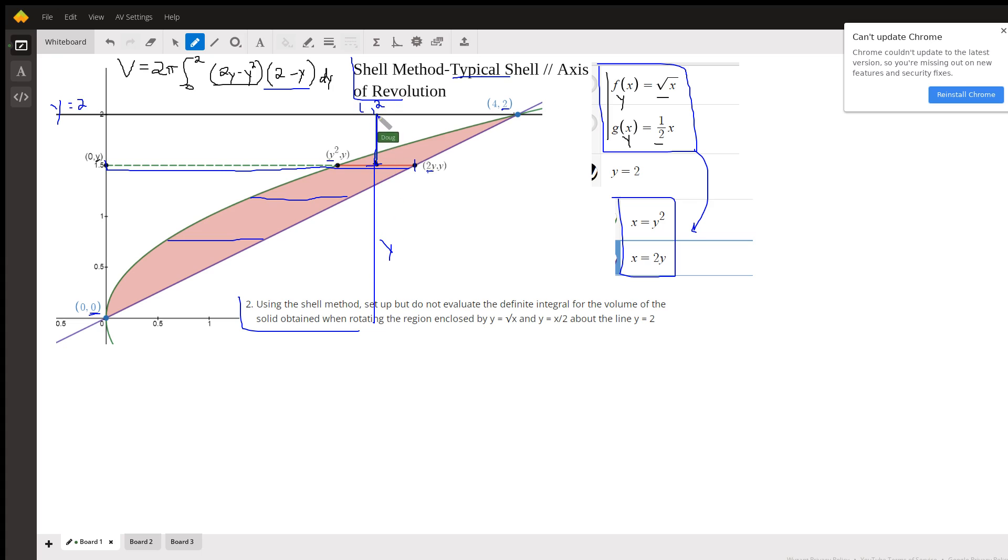So by taking 2 minus y, we've got this height right here, or this radius right here, radius of a typical shell.